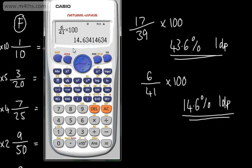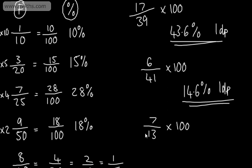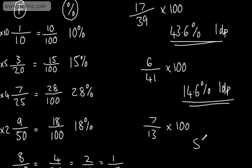If we're converting a decimal to a percentage, we multiply the decimal by 100. So in doing these fractions, it gives me the decimal equivalent which I then multiply by 100. Let's do one more: 7 out of 13. We can see it's going to be just over 50% — because 7 into 14 goes twice, which would be 50%. So 7 over 13 multiplied by 100 gives us 53.8, so 53.8% to 1 decimal place.